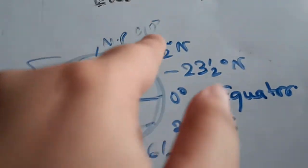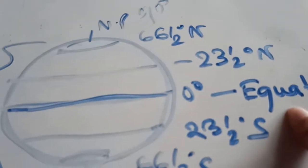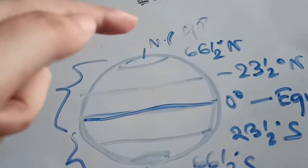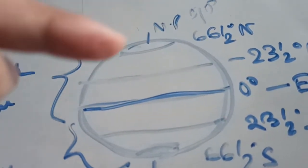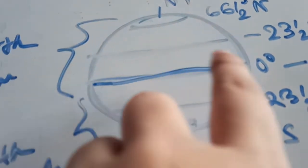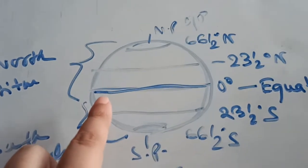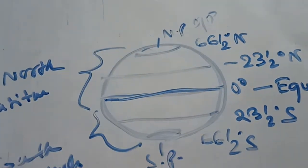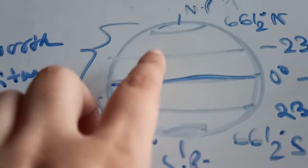Let us now learn more about each individual latitude, starting with the equator. The equator is an imaginary line which is drawn at an equal distance from both poles — the north pole and the south pole. The equator encircles the earth in the midway, from the center portion of the earth between the north pole and the south pole. It divides the earth into two hemispheres, or two equal halves: the northern hemisphere and the southern hemisphere.